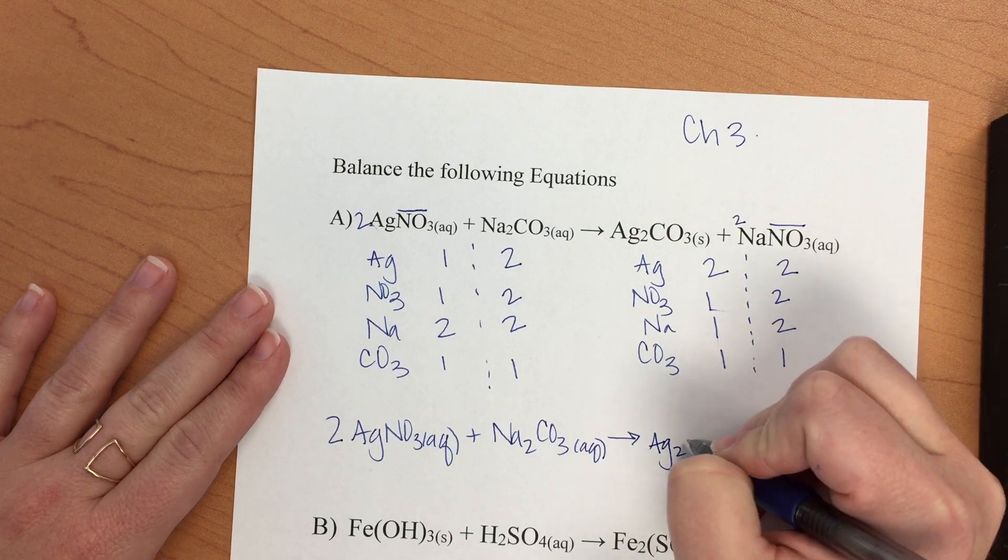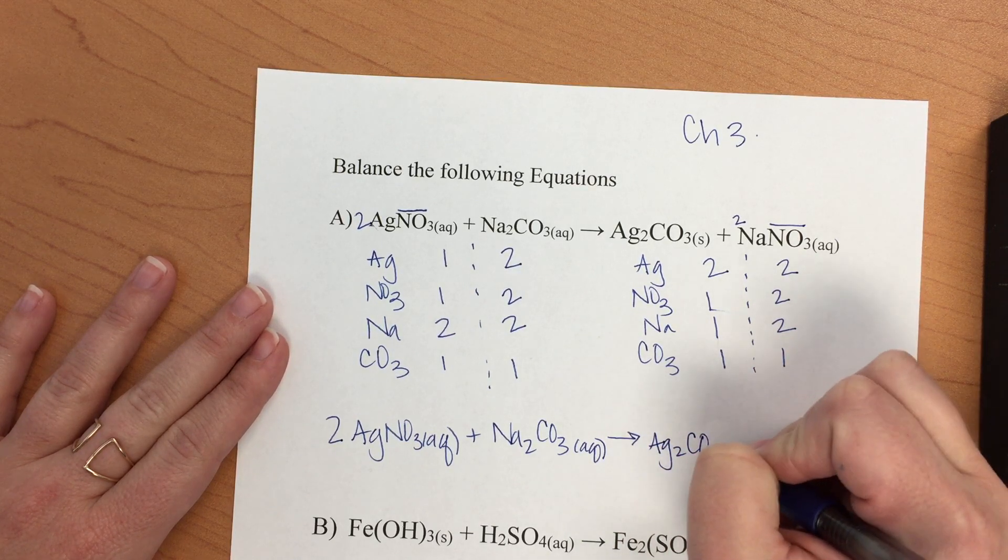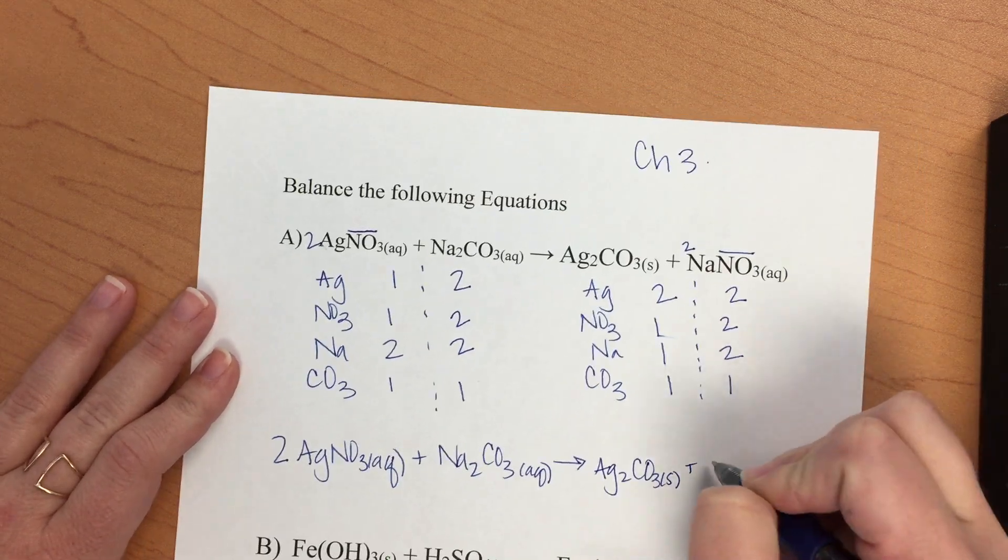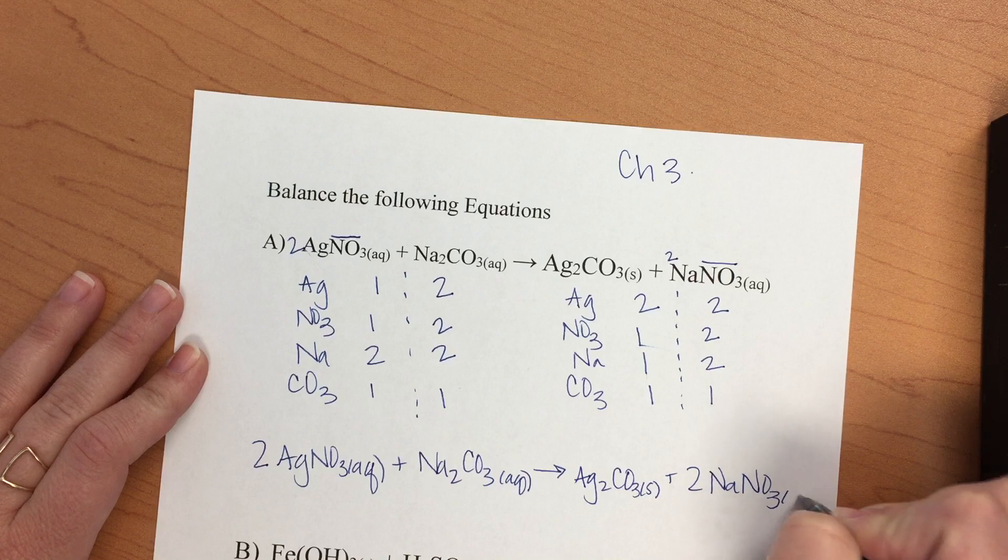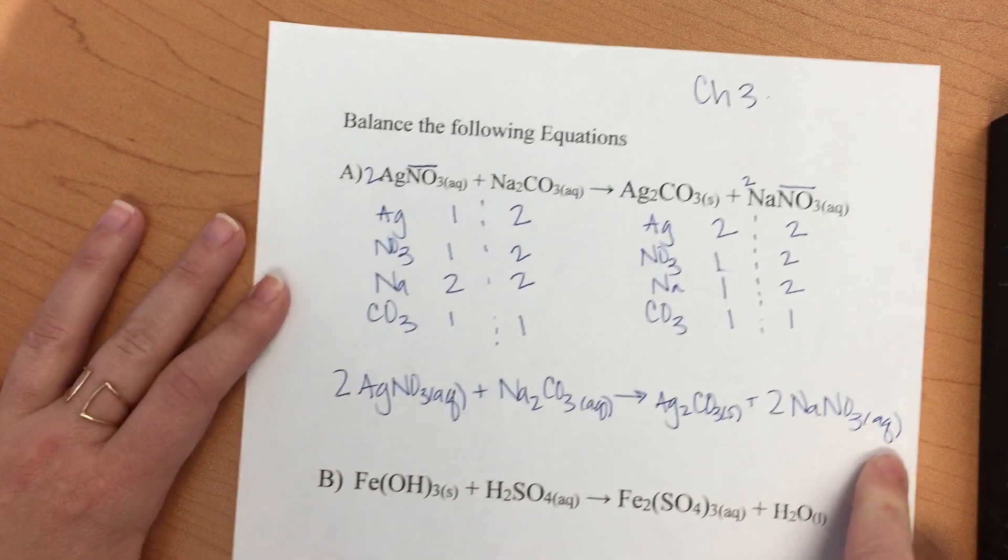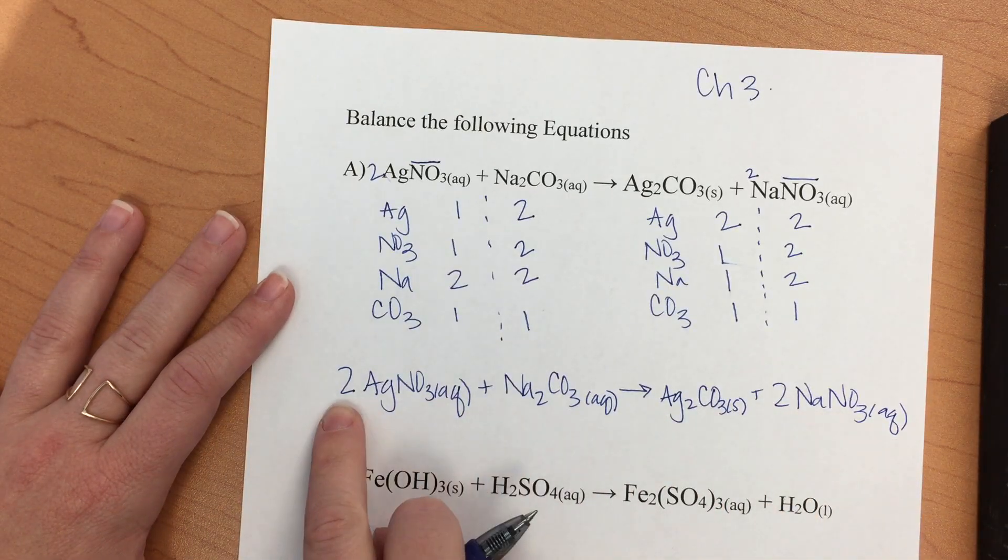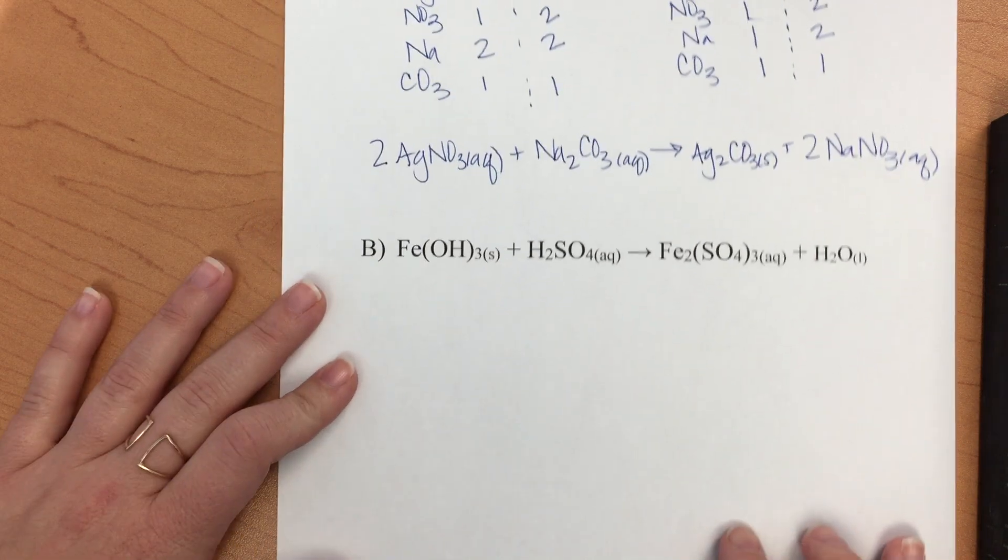What about for the next one? So we'll write out our substituents. Now one of the tricks here is that our polyatomic ions, unlike up here, are going to be a little different. We still want to only balance four different entities.